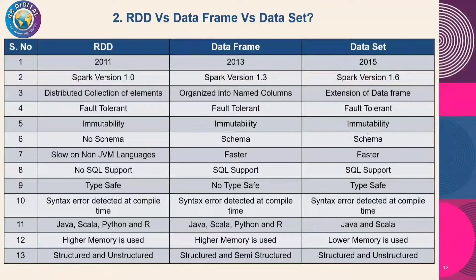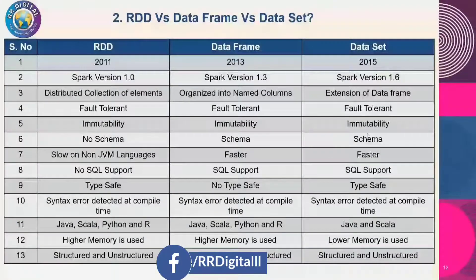RDD was introduced in 2011, the DataFrame concept was introduced in 2013, and Dataset came in 2015. In Spark, the RDD concept was introduced in Spark 1.0, the DataFrame concept in Spark 1.3, and the Dataset concept in Spark 1.6.